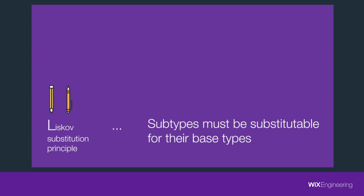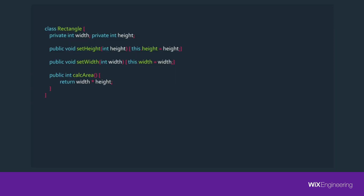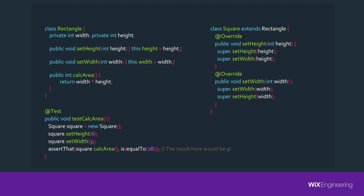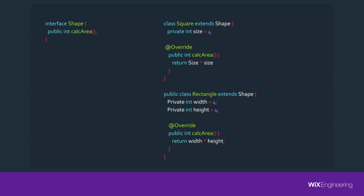The third principle is Liskov's Substitution Principle. Subtypes must be substitutable for their base types. Basically it means that if you want to replace a class with a subtype class, the behavior should stay the same. Let's go back to our example. Here we have a rectangle that has two properties — width and height — and one method called calcArea. Now for the square: although a square is a rectangle, it has some different behavior. A square has the same value for width and height. Take a look at the test here — although the client expected to get 18, they get 9. This is exactly a Liskov's Substitution violation; square and rectangle are not substitutable. A proper solution would be that both square and rectangle implement an interface shape, where shape has only calcArea and holds no size properties like width and height.